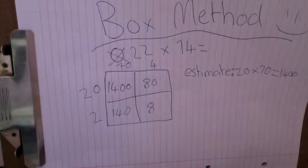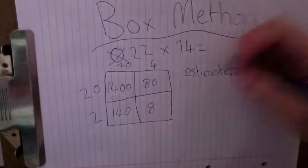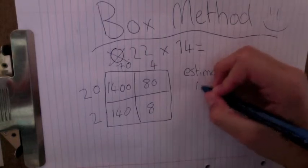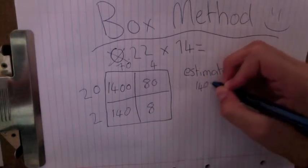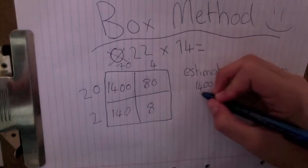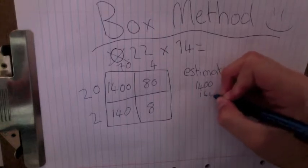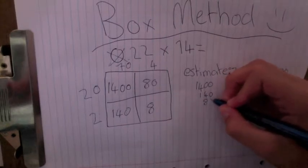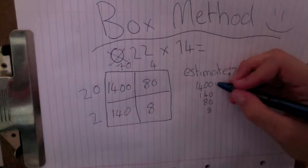We have to figure out what all that adds up to. So we'll do an algorithm. So we'll go 1,400, 140, 80 and 8.